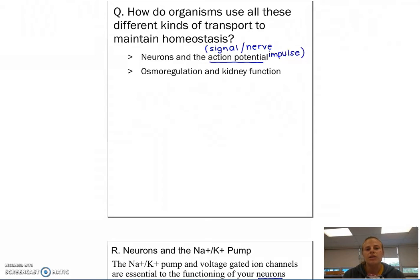One of the ways that organisms use active transport is to send action potentials known as signals, also called nerve impulses, down the axon of neurons. So the sodium-potassium pump, which is a form of active transport, helps restore what's called the resting membrane potential, which is vital to send messages throughout our bodies.